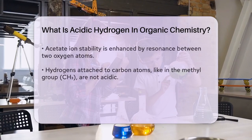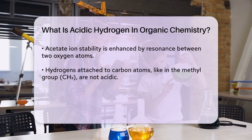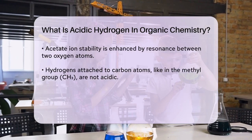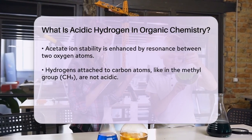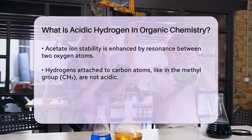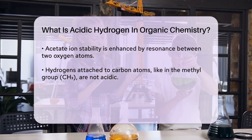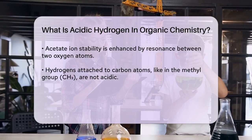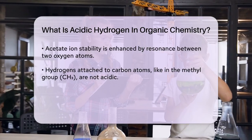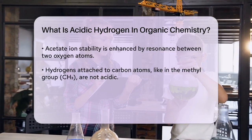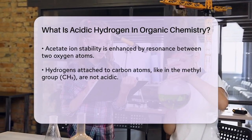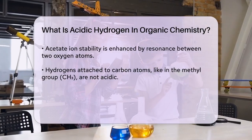In contrast, hydrogens attached directly to carbon atoms, like those in the methyl group CH3 of acetic acid, are not acidic. Removing one of these hydrogens would result in a less stable radical or negatively charged carbon atom, which is not favorable.